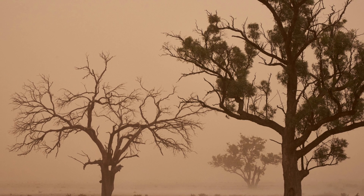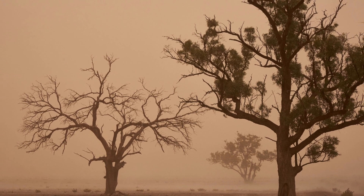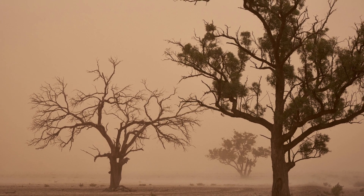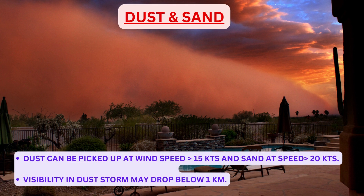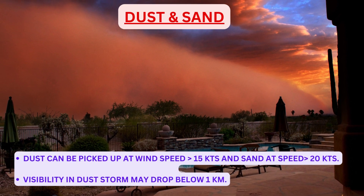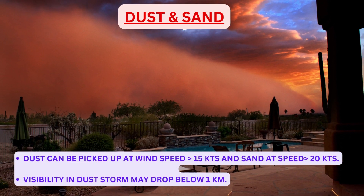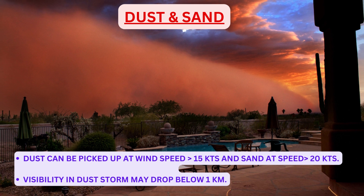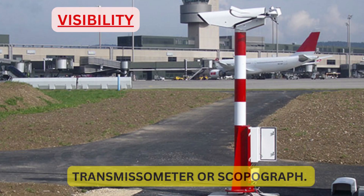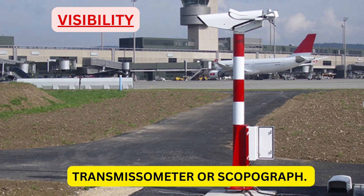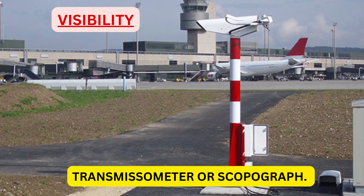The presence of dust and sand particles in the atmosphere also reduces visibility drastically. Dust can be picked up at wind speeds of more than 15 knots and sand at wind speeds of more than 20 knots. Visibility in a dust storm may drop below one kilometer.